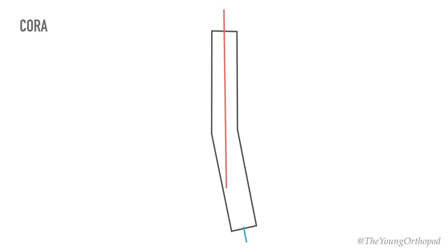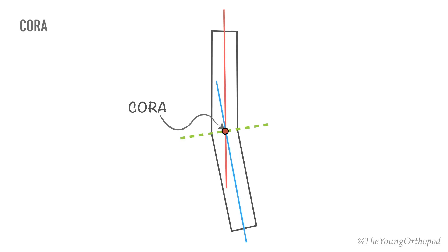The point at which the proximal and distal axis lines of a deformed bone intersect is called the center of rotation of angulation, or CORA. It is the point about which a deformity may be rotated to achieve correction. The angle formed by the two axes at the CORA is the measure of angular deformity in that plane.